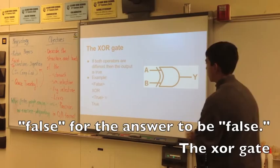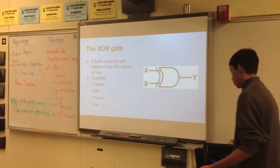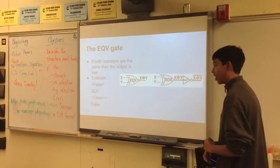The NOR gate: if both inputs are false, then the output will be true. It's sort of like the reverse of the OR gate. If both inputs in the OR gate are going to be false, then the answer will be false. But if either is true, then the output is false, because both of them have to be false for the NOR gate to output true.